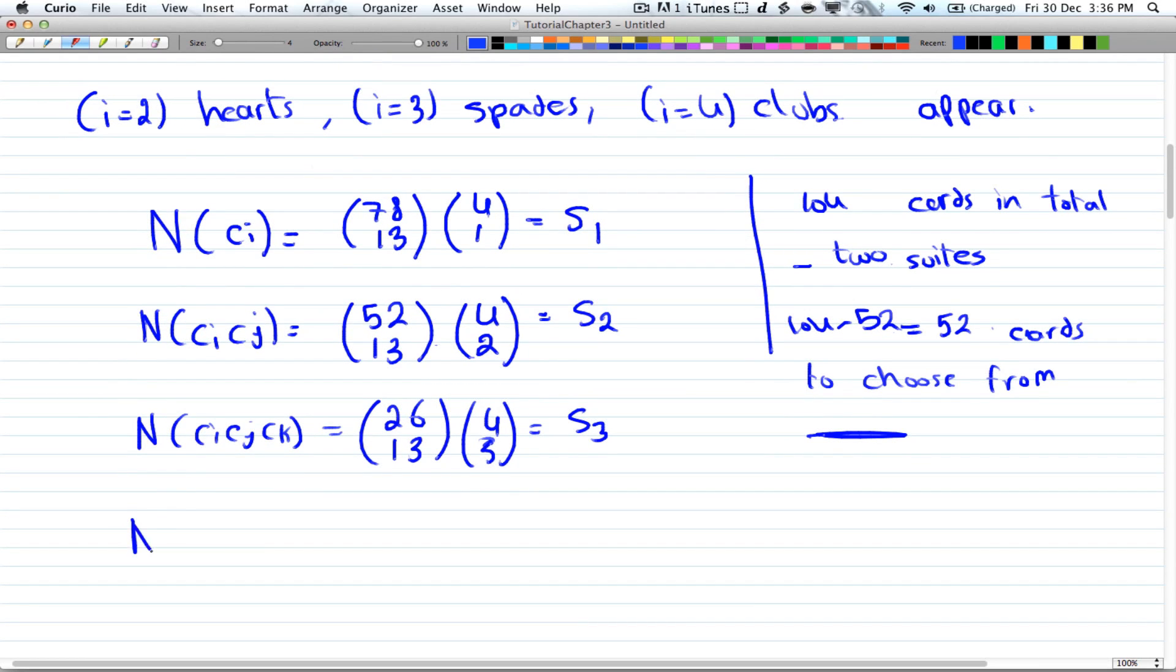And then we have our s_4 will be N of c_i intersect c_j intersect c_k intersect c_l. And that will be equal to 0 choose 13 times 4 choose 4, and that will be equal to our s_4. And this is just 0. So here you have 0.